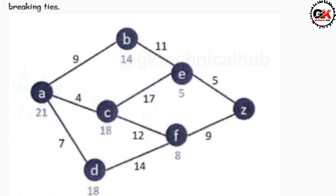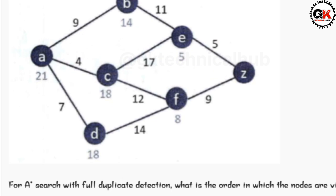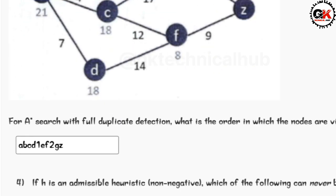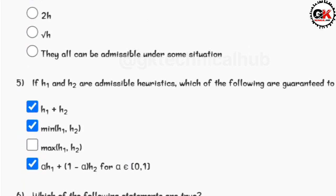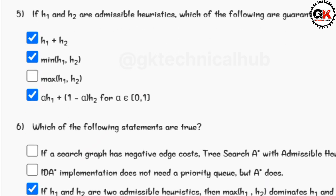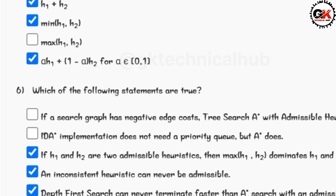Solution for question number three is ABCD1EF2GZ. Guys, if you find any other order, do mention in the comments. Question number four is option A and D. Solution for question number five is options one, two, and four. Question number six is three, four, five.